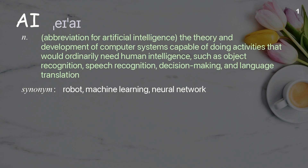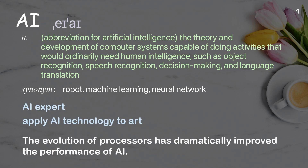AI: abbreviation for artificial intelligence. The theory and development of computer systems capable of doing activities that would ordinarily need human intelligence, such as object recognition, speech recognition, decision making, and language translation. Examples: AI expert; apply AI technology to art. The evolution of processors has dramatically improved the performance of AI.